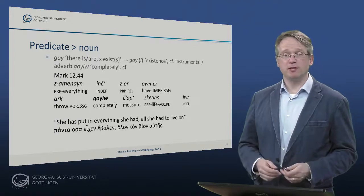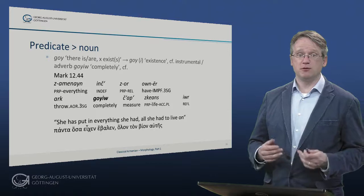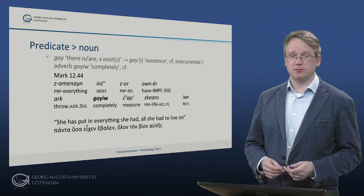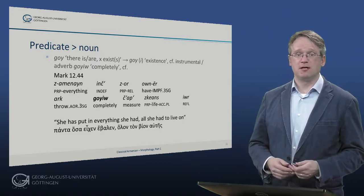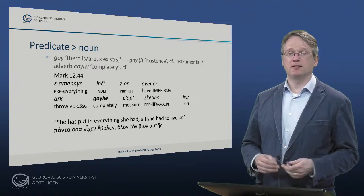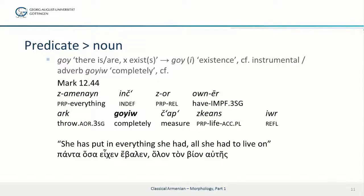Finally, nouns may also be derived from inflected verb forms. This is found in go – there is, there are – a copular verb – and from that we have a substantive go meaning existence. It is found in the gospels in the instrumental adverb go jiv – completely. Here's an example: Zaman ein inch zor uner, ark, go jiv – completely – meaning she has put in everything she had, all she had to live on.